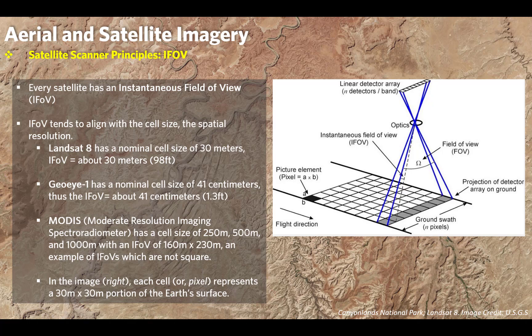MODIS — the Moderate Resolution Imaging Spectroradiometer — has a cell size of 250 meters, 500 meters, and 1,000 meters, depending on which sensor you look at. Each has an instantaneous field of view of 160 by 230 meters, so MODIS has a nominal cell size that is not square. In the image shown, each pixel represents a 30 by 30 meter portion of the Earth's surface — this would be based off Landsat 5 data.